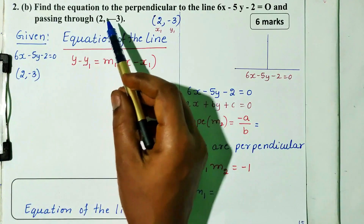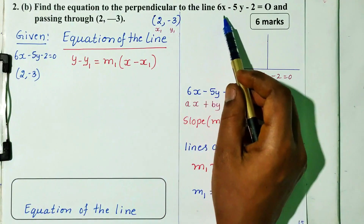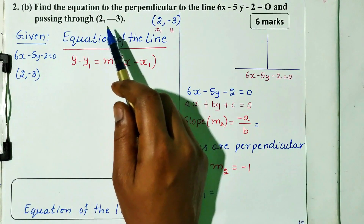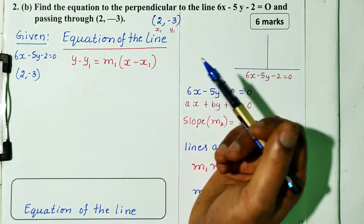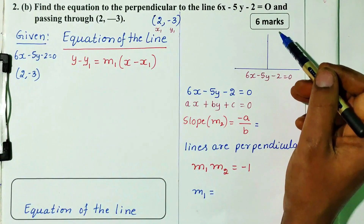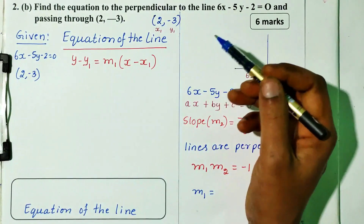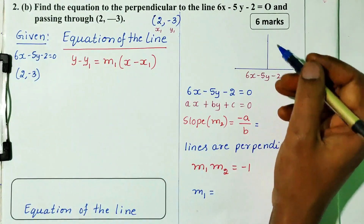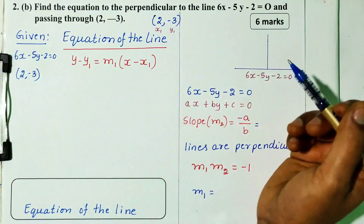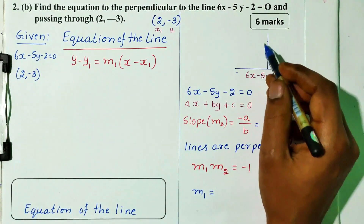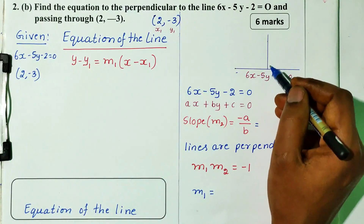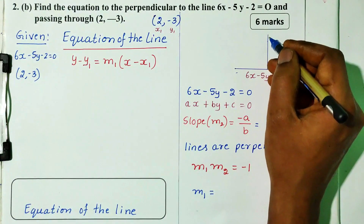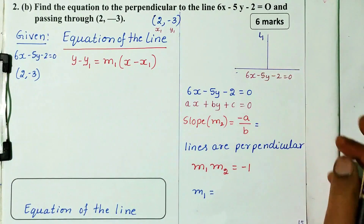Question number 2b: find the equation of the line perpendicular to the line 6x minus 5y minus 2 is equal to 0 and passing through the point (2, minus 3). This is 6 marks. The perpendicular line should be at 90 degrees, so it should be perpendicular. We will name the lines L1 and L2.